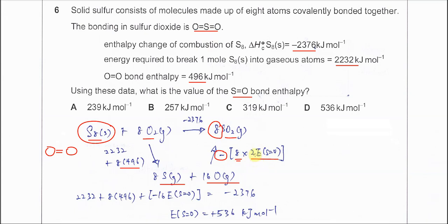After that, sum everything together. Follow the arrows. This enthalpy plus this enthalpy equals this enthalpy. After rearranging, you get the bond energy of the S=O double bond.